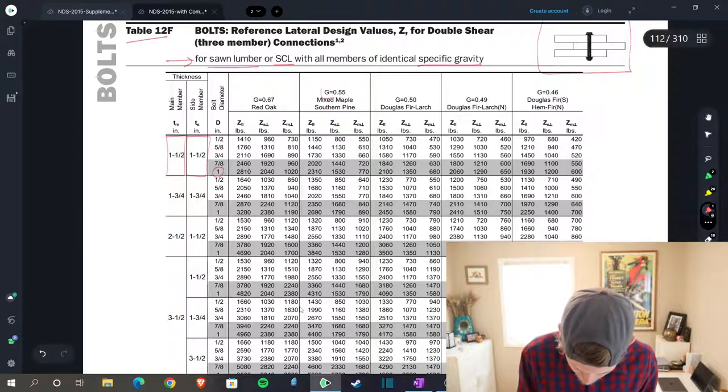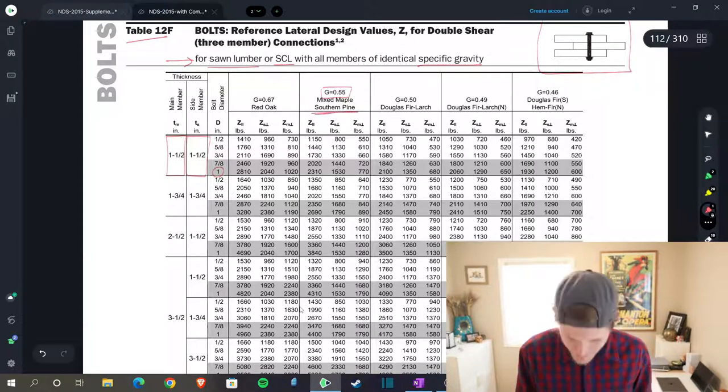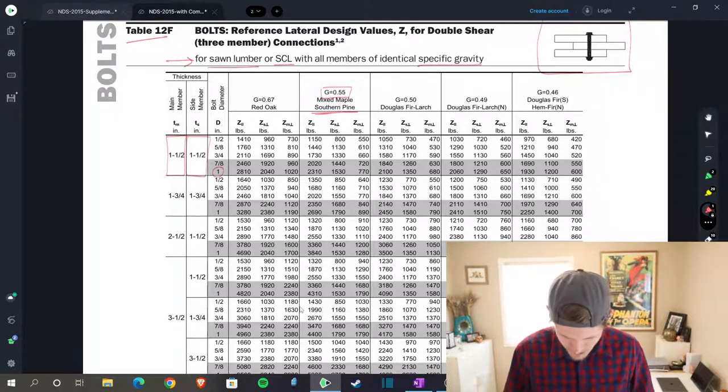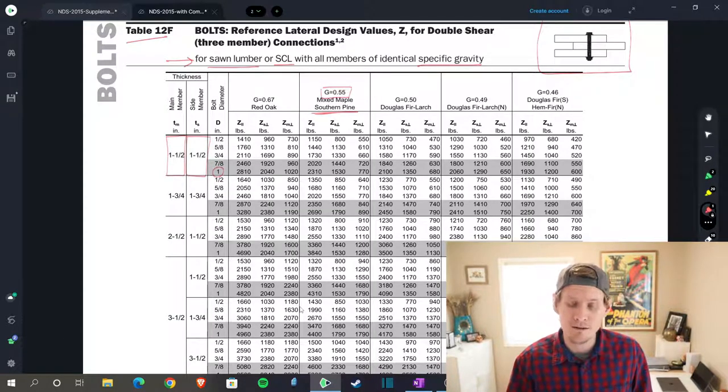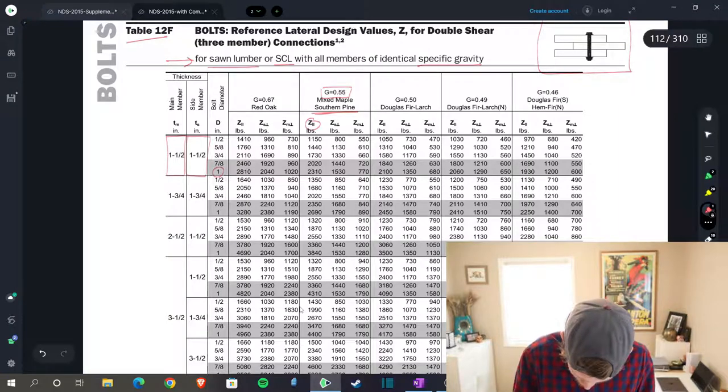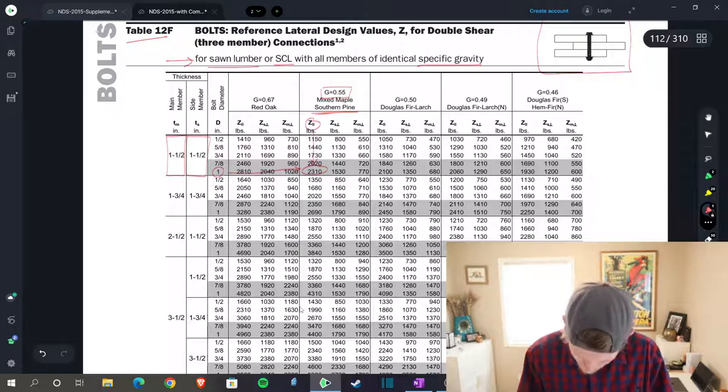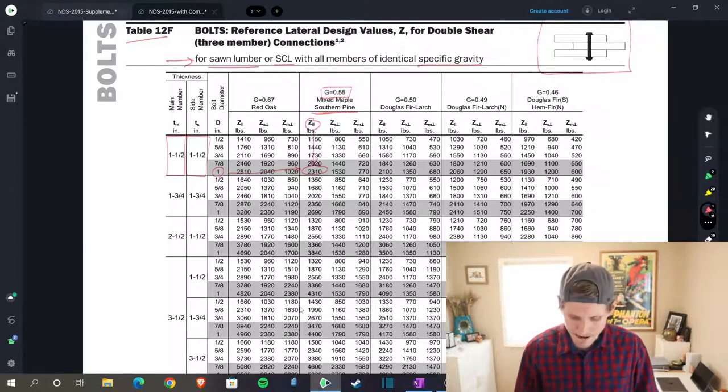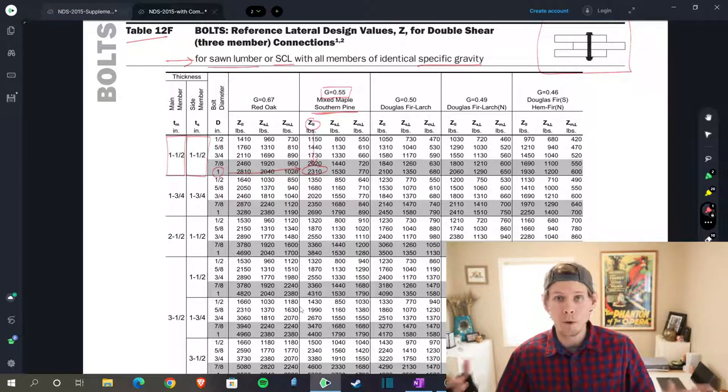Now let's go to our species. You see here a specific gravity of 0.55—that's southern pine right there. I know it says mixed maple at the beginning, but also southern pine. We are loaded in shear parallel to grain—that is z parallel. Come on down, come on over, that gets us 2310 pounds per bolt.